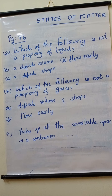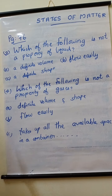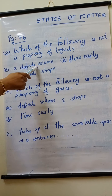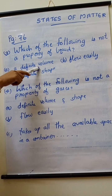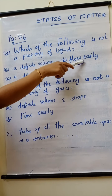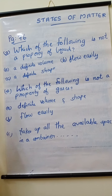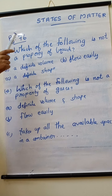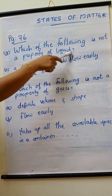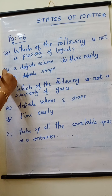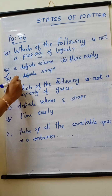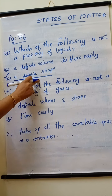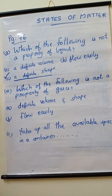Third question is, which of the following is not a property of liquid? We know that liquids have a definite volume, so that is a property. Liquids flow easily, so that is also a property. But liquids do not have a definite shape, so that is the property which liquids do not have. Therefore option C, liquids have a definite shape, is not a property of liquid.